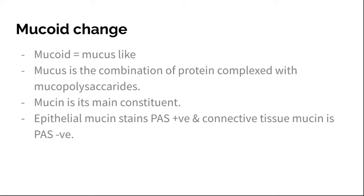The third type is mucoid change. 'Mucoid' means something mucus-like. Mucus is a combination of protein plus mucopolysaccharide, and its main constituent is mucin. An important term here: epithelial mucin is PAS positive, while connective tissue mucin is PAS negative. PAS stands for Periodic Acid-Schiff test — a staining method used to detect glycogen, polysaccharide, or glycoprotein deposition.